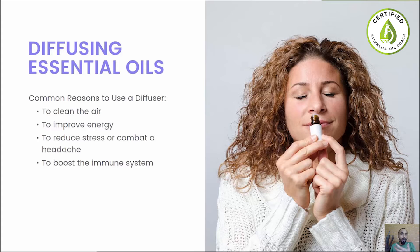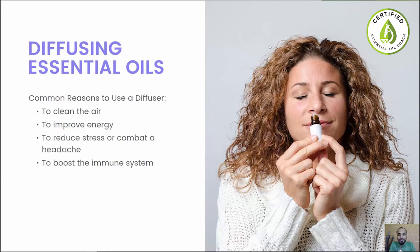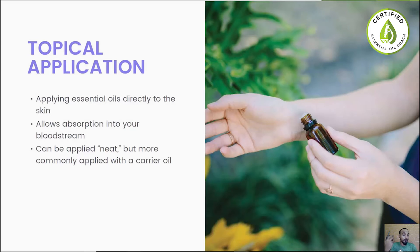To boost the immune system, diffusing essential oils can help support it by breathing them in, especially for respiratory health. Oils like frankincense, eucalyptus, lemon oil, and thyme oil are great for supporting your immune system. Probably one of the biggest benefits of diffusing essential oils is for mood and emotional support — breathing them in can strongly affect your mood and brain, as illustrated by the image shown here.